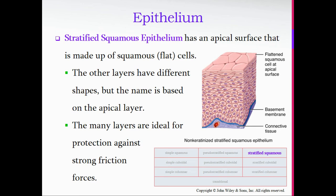Next is stratified squamous epithelium — multiple levels of flattened cells. When naming, if you notice the cells out at the surface are flat, but down at the base they have more of a cube shape. As they are pushed further out to the surface, they become flatter. Since they're flat at the apical surface, this is referred to as stratified squamous. The many layers are ideal for protection against strong friction forces. This is your skin — the very outer surface called your epidermis, where epi means 'upon' and dermis means 'skin.'